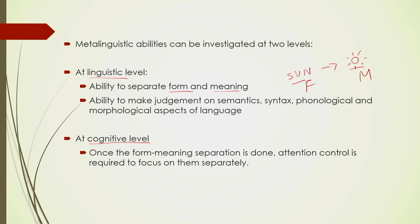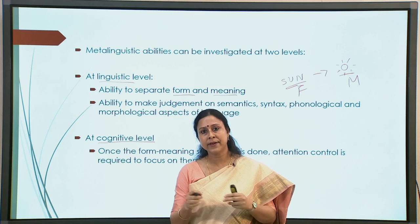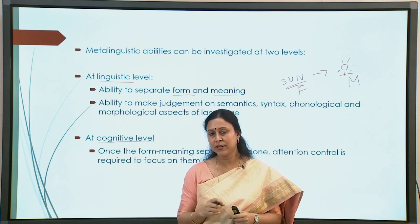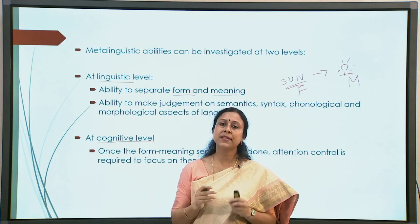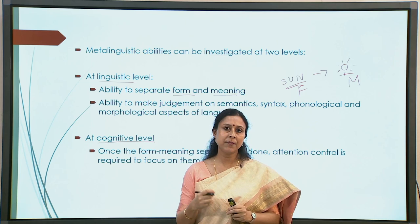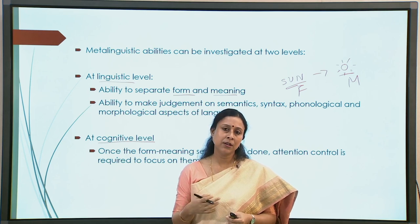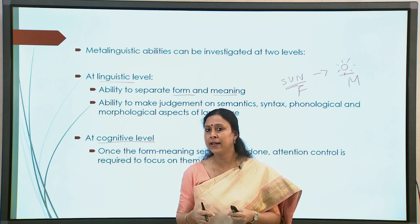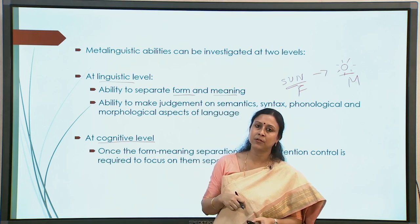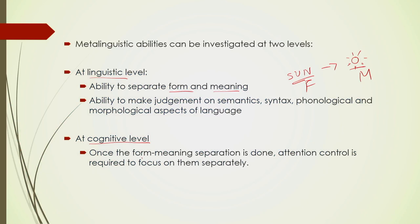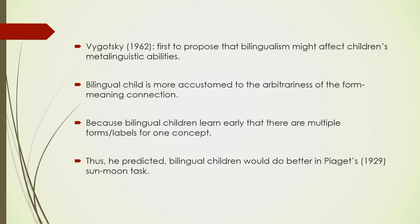This also has a cognitive counterpart. Once you have understood that language is not one solid whole — that it has various nodes or parts — and once you have separated those nodes in your head, you should be able to handle them separately if needed, or use certain permutations and combinations of these various factors. That is where cognitive control comes in. Once form-meaning separation is done, attention control is required to focus on them separately if need be.